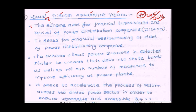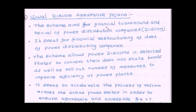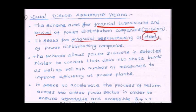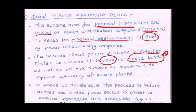With 3 to 4 lakh crore in debt, power distribution companies are in a bad financial state. To restructure their debt and make them profitable, the central government launched the Ujwal Discom Assurance Yojana. The scheme aims for the financial turnaround and revival of power distribution companies and seeks financial restructuring of their debt. It allows power discoms in selected states to convert their debt into state bonds and take measures to improve the efficiency of power plants.